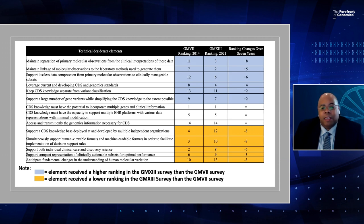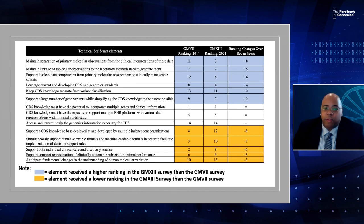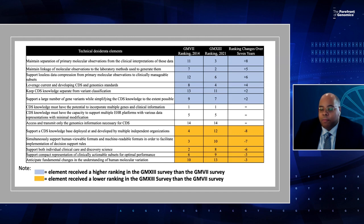Mark and I thought to combine these two surveys and see what changed between 2014 and 2021. What you can see is that some areas maintained the same level of ranking—highlighted in white—such as 'CDS knowledge must have potential to incorporate multiple genes and clinical information' and 'CDS knowledge must have capacity to support multiple EHR platforms with minimum modifications.' Some elements show significant progress, highlighted in blue, while others still require work, highlighted in yellow. Overall, it shows both progress made and still substantial opportunities remaining.